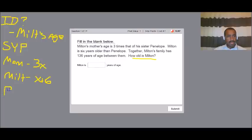And then we'll just abbreviate P for Penelope. Penelope is just X. We don't know how old she is. And then we know the total of all their ages together is 136.